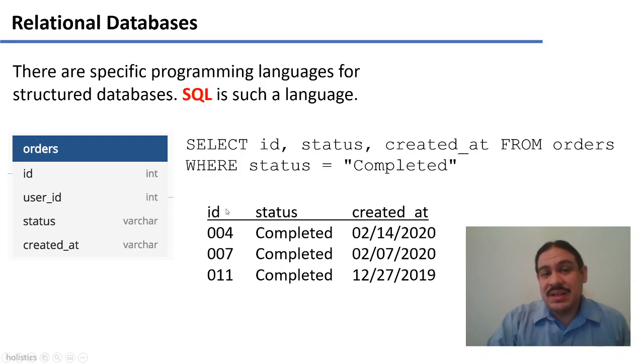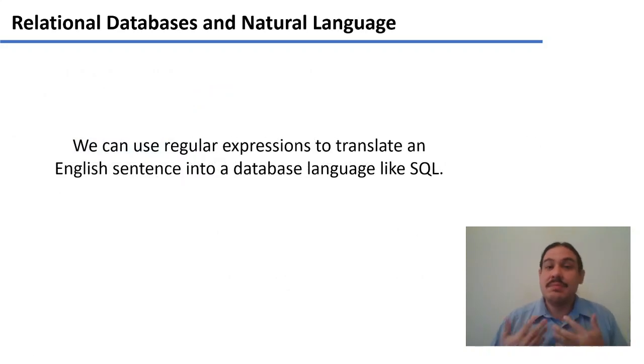And so what this would return would be something like this, a table with the ID of the order, the status, which of course all of them have to be completed, and they were created at a certain date. And notice that in the query we did not ask for the user ID of who made the order, so it's not giving us that information. So when you are using a relational database, there are specific programming languages for how to interact with this database.